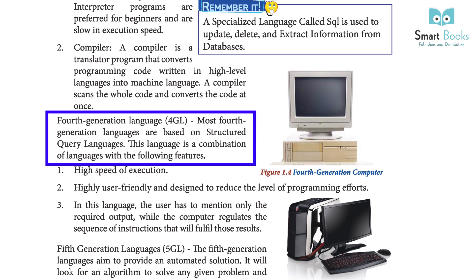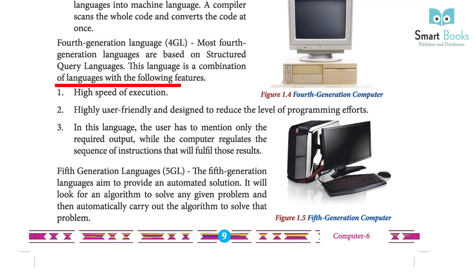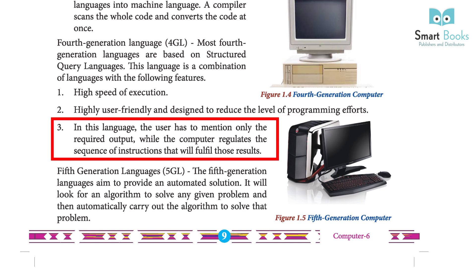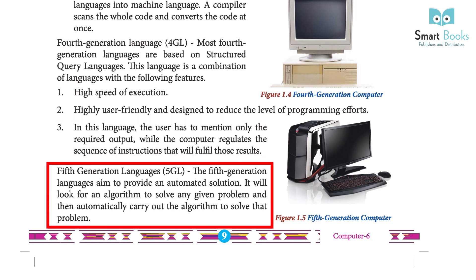Fourth generation language (4GL): most fourth generation languages are based on structured query language. Features include: high speed of execution; highly user-friendly and designed to reduce the level of programming effort; and the user only needs to mention the required output while the computer regulates the sequence of instructions. Fifth generation language (5GL): aimed to provide an automated solution — it looks for an algorithm to solve any given problem and automatically carries out that algorithm.